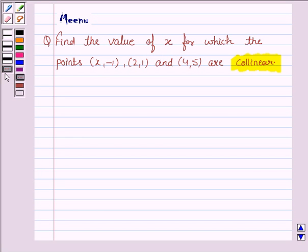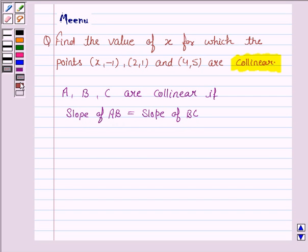Let us now understand the criteria for 3 points to be collinear. 3 points, say A, B, C, are collinear if slope of AB is equal to slope of BC. So, this knowledge will work as key idea.